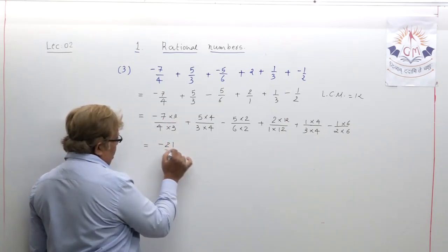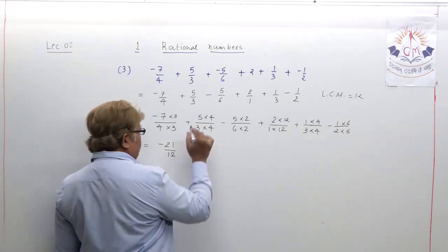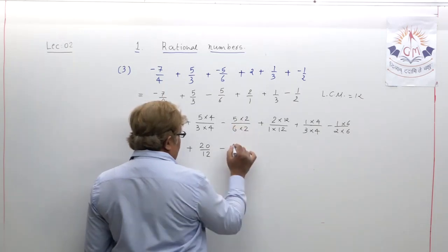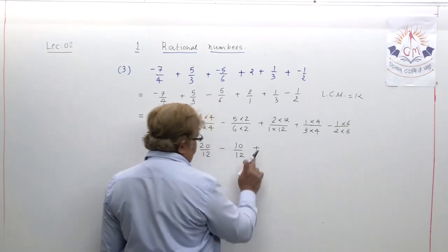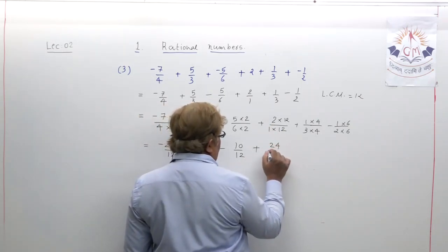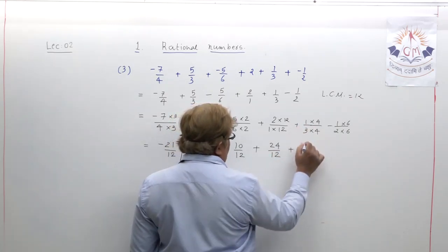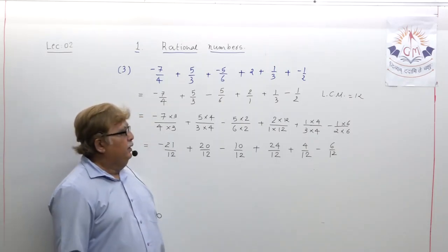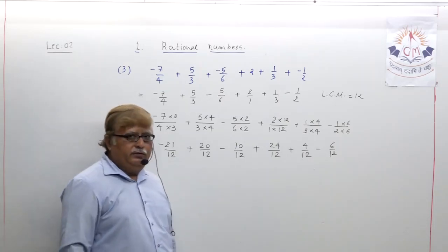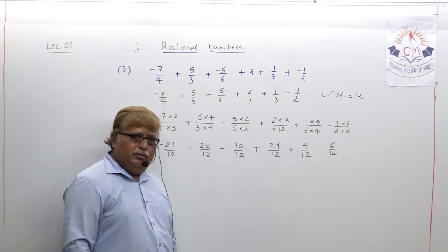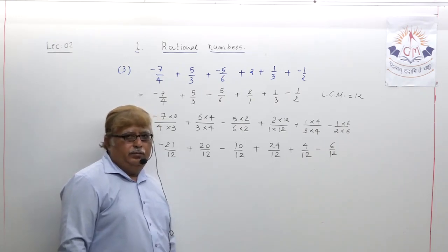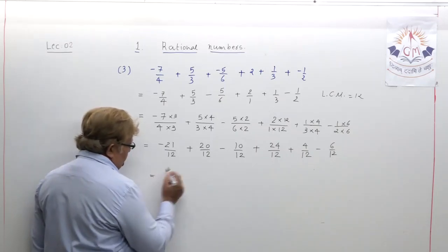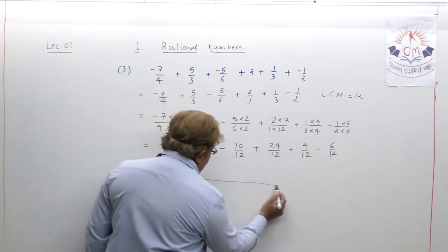So we get: minus 21 upon 12, plus 20 upon 12, minus 10 upon 12, plus 24 upon 12, plus 4 upon 12, minus 6 upon 12. Now the common denominator is 12.